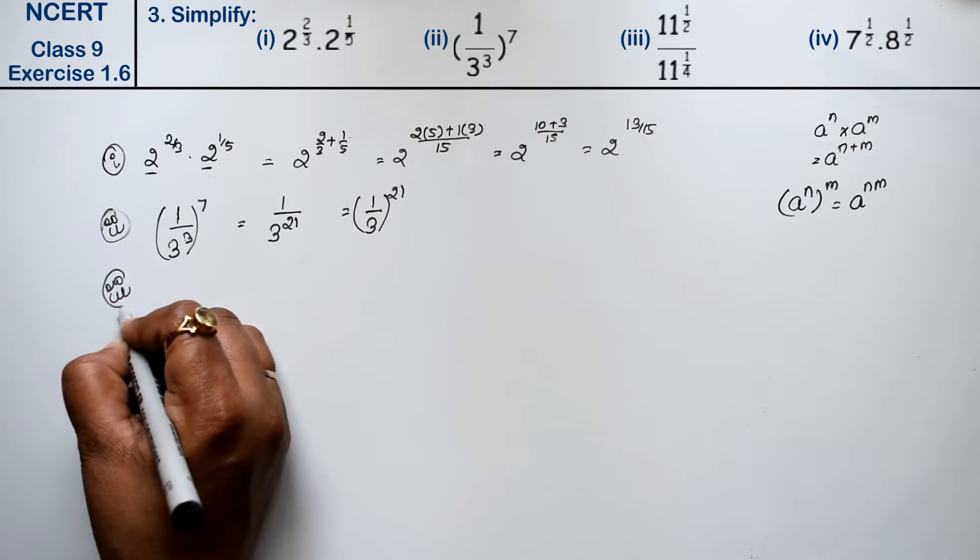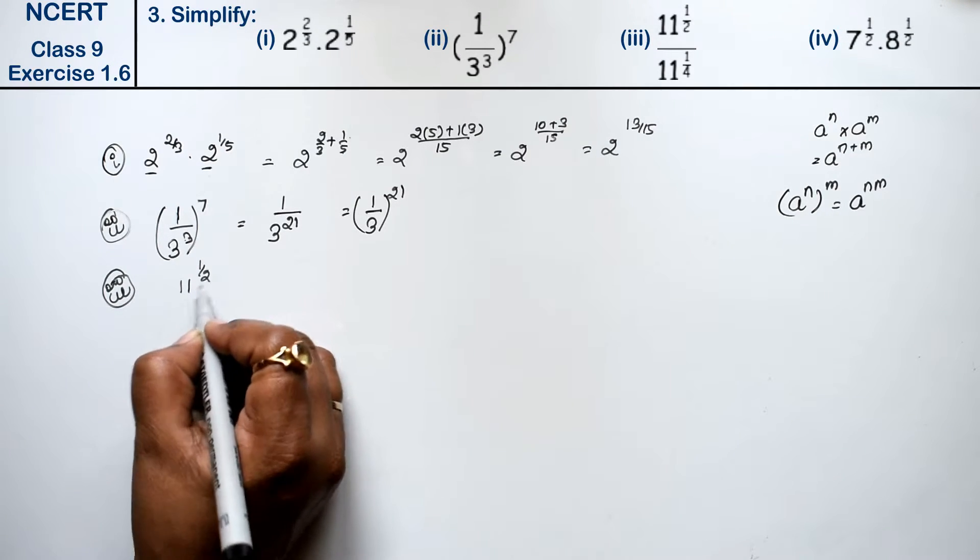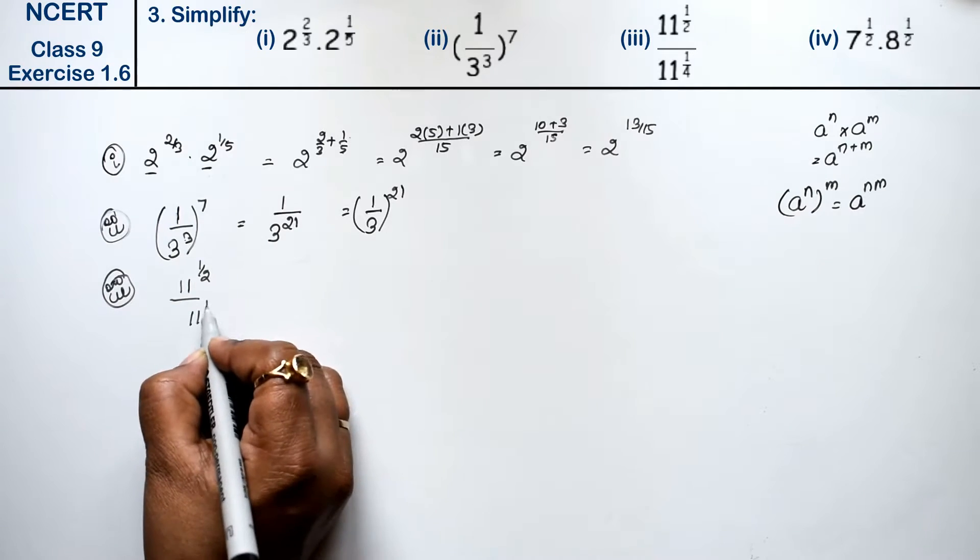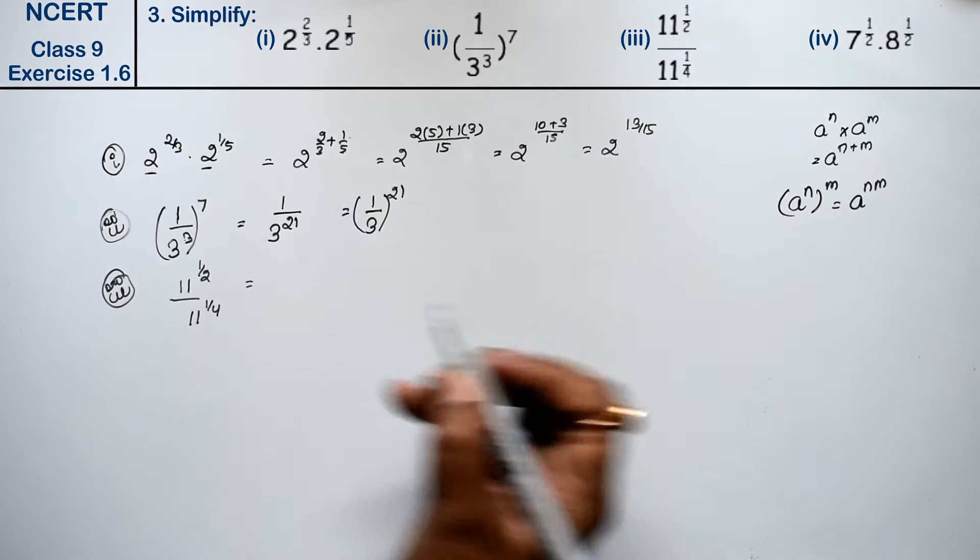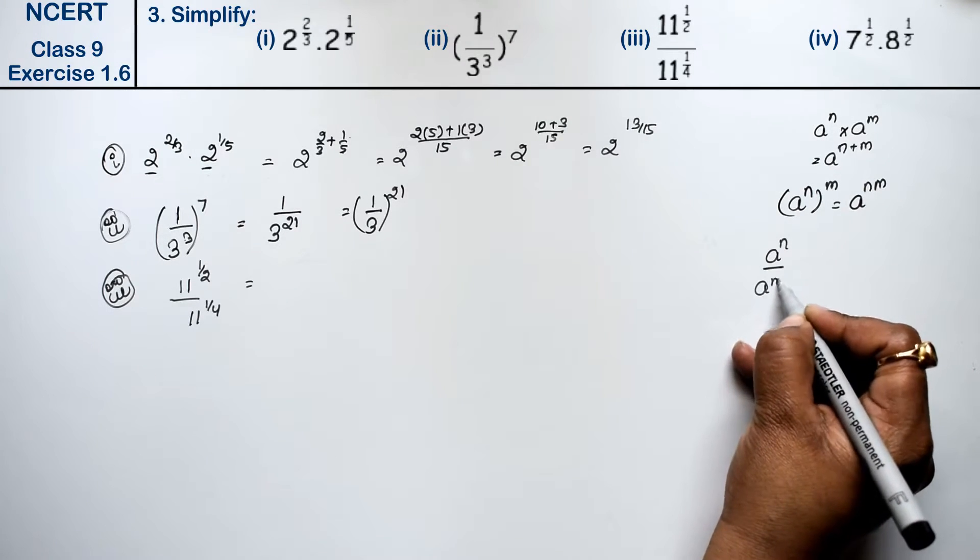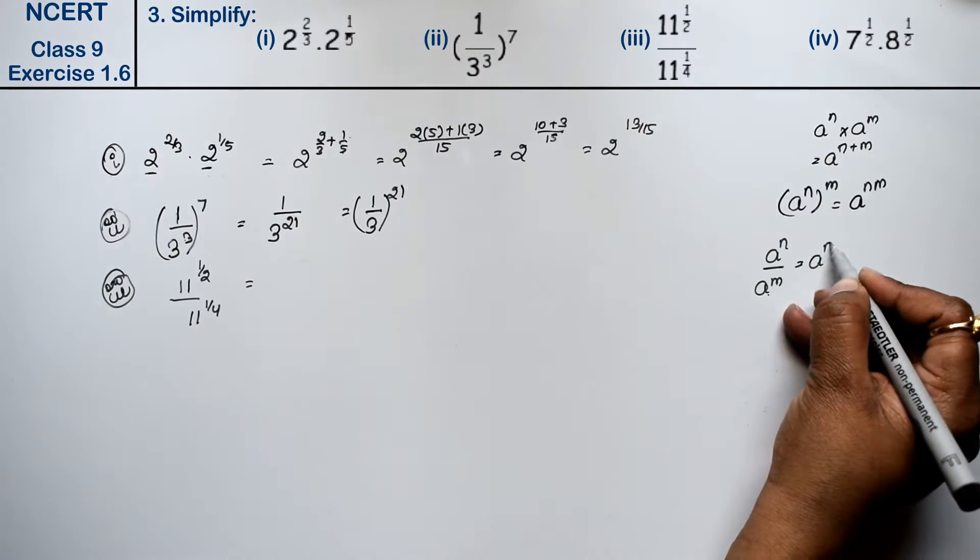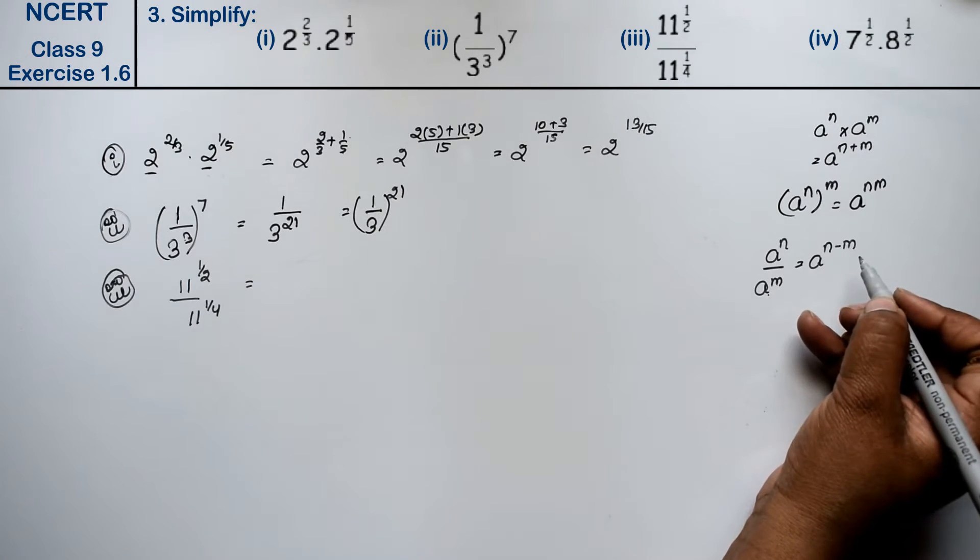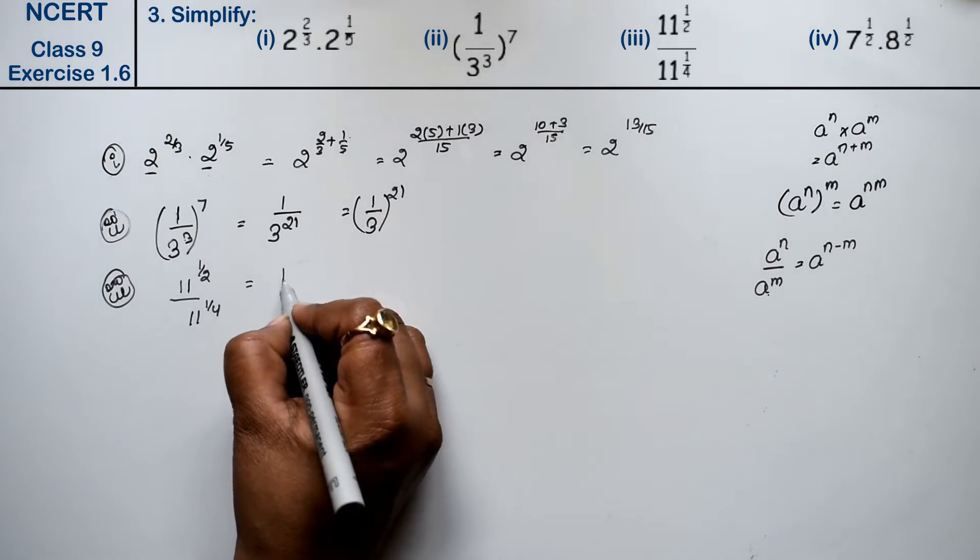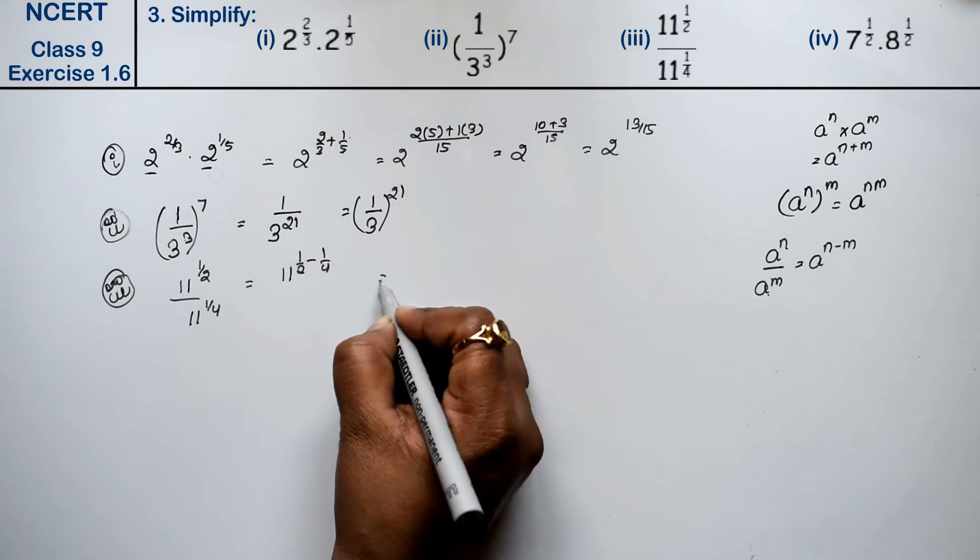Let's do third part. Third part is 11 to the power 1 upon 2 upon 11 to the power 1 upon 4. Friends, when it's like this, A to the power n upon A to the power m, in divide it becomes minus, A to the power n minus m. 11 to the power 1 upon 2 minus 1 upon 4. So what can we do?